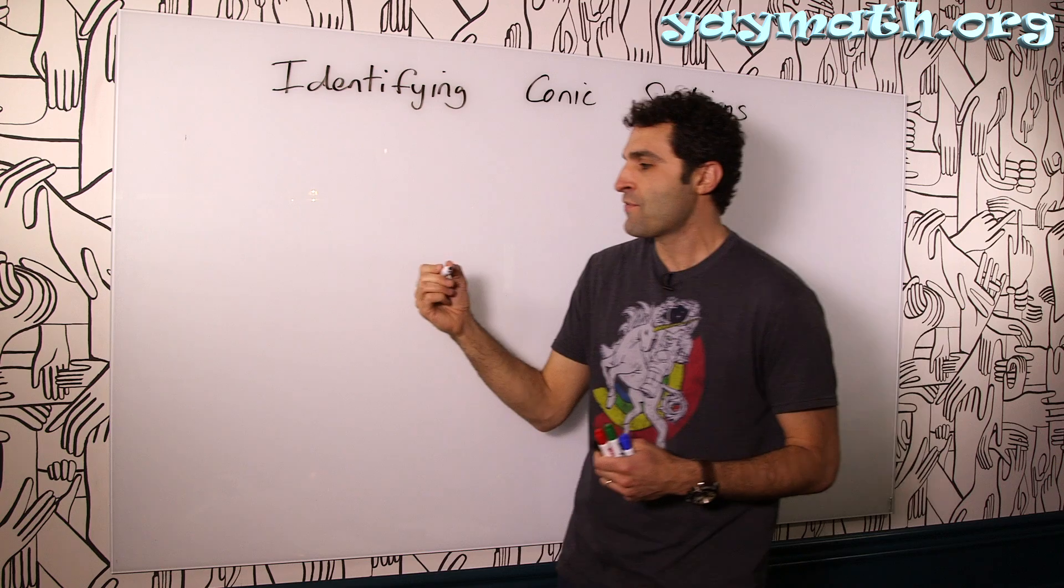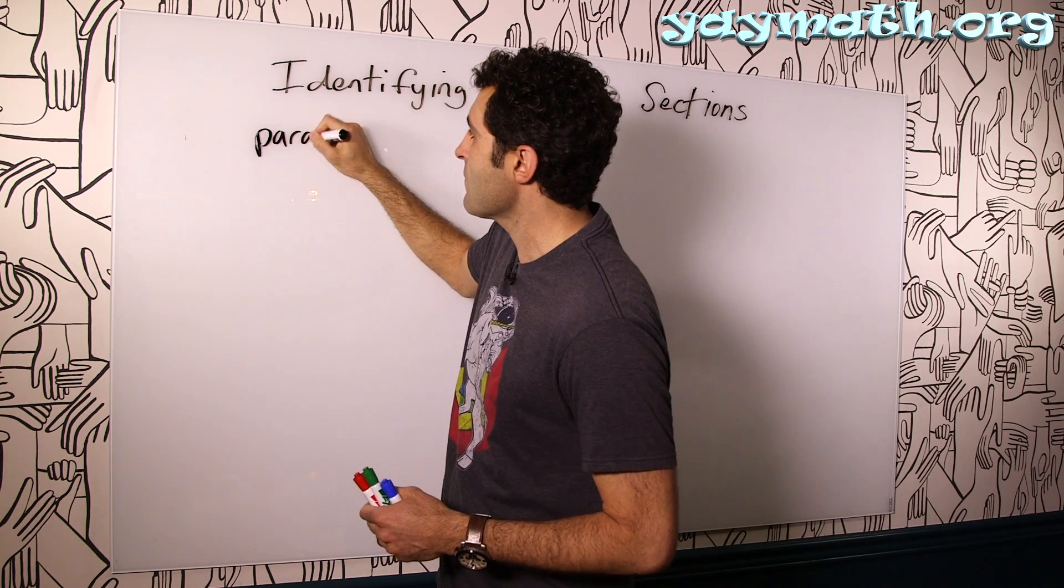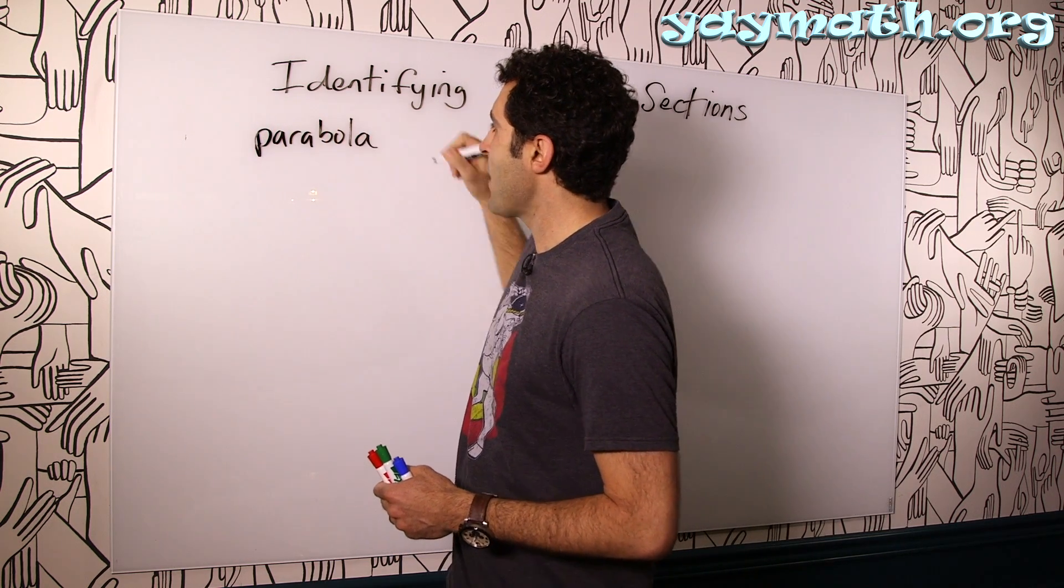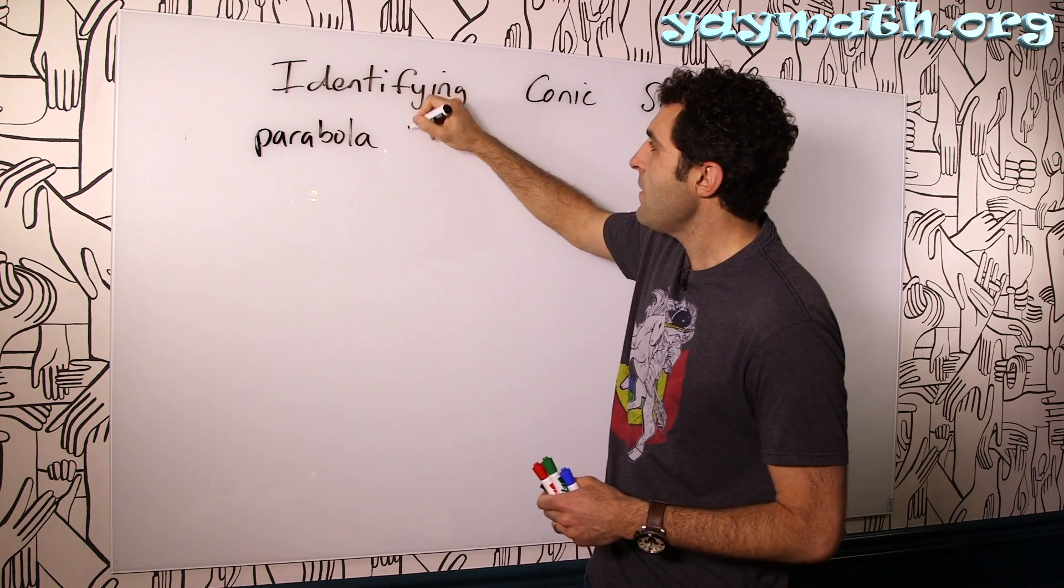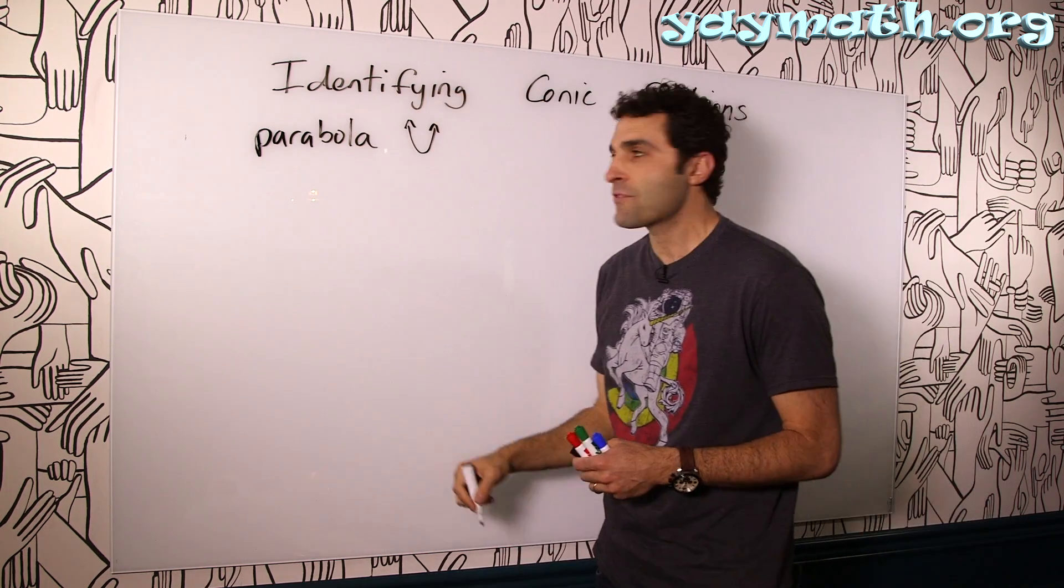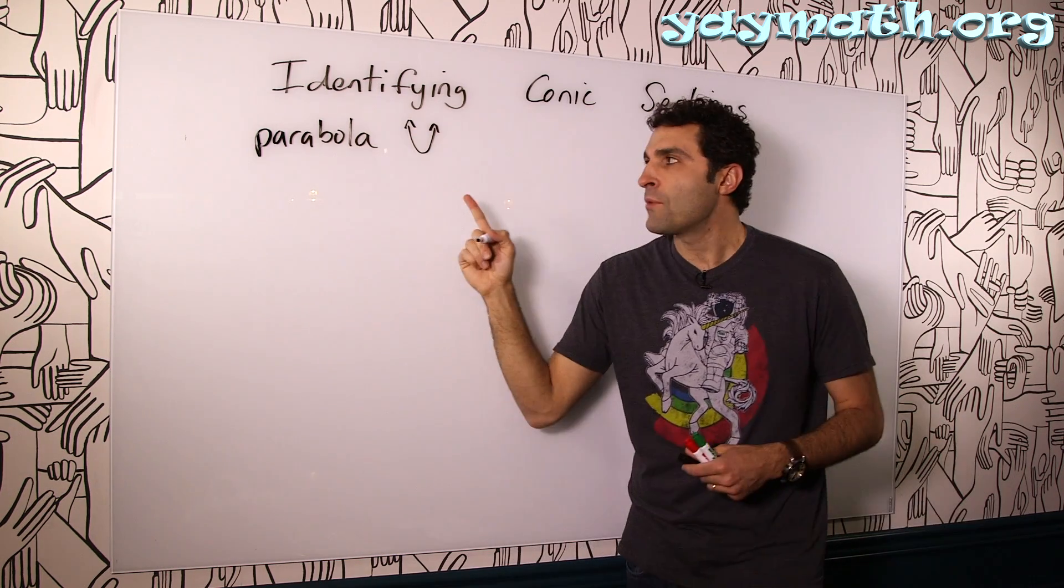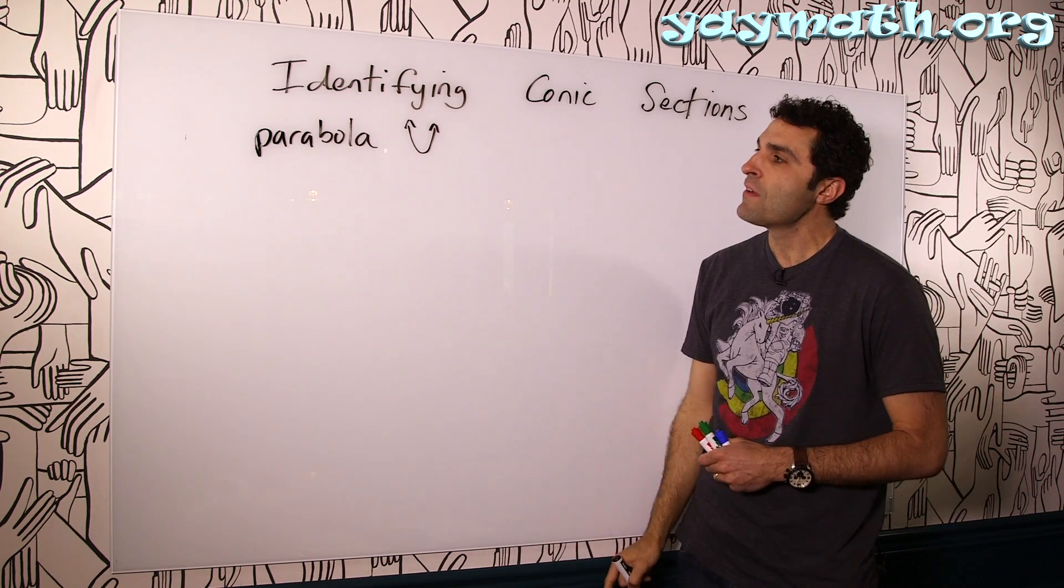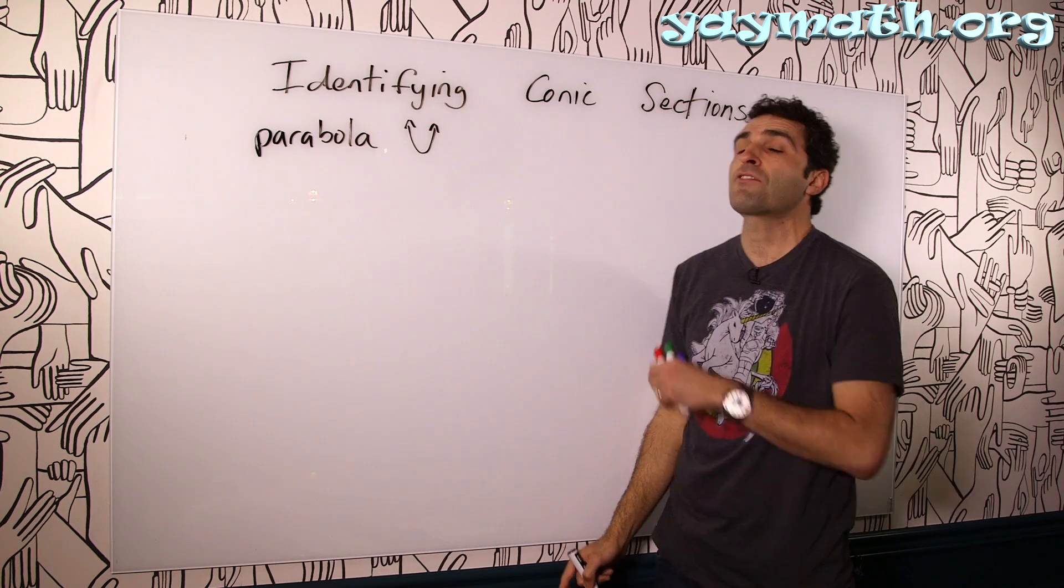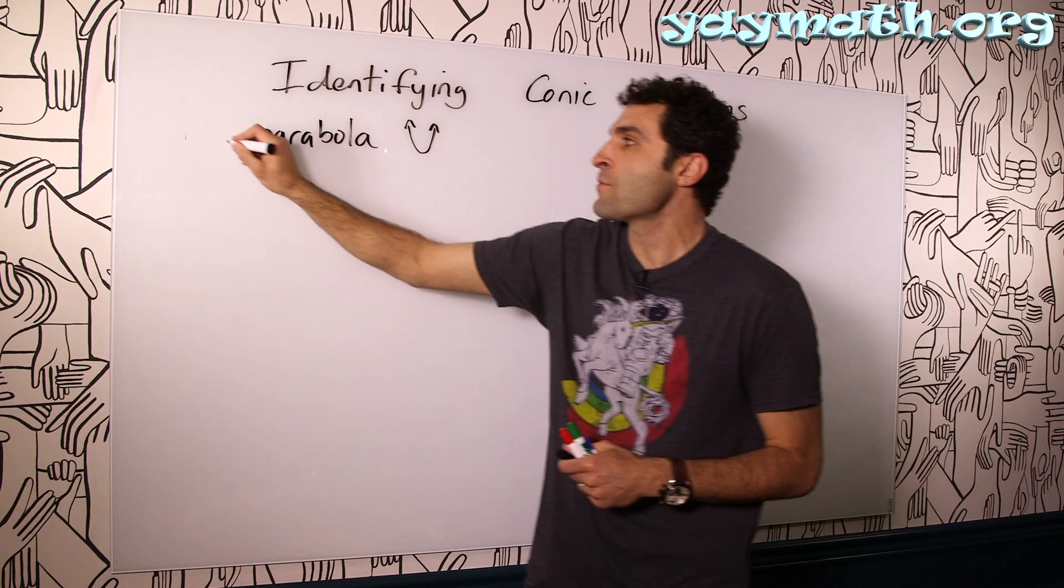So let's list out the conic sections first. We have the parabola. The parabola is looking like one of these maybe, you know, the little u-shape, a little bowl. It can go up, down, left, or right. Then we have, you know what, before we go into the other ones, why don't we actually put in some of the characteristics of the parabola, and then we'll identify the other ones. There's four total, it's the first one.